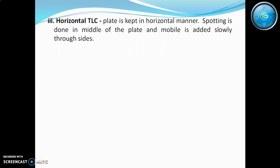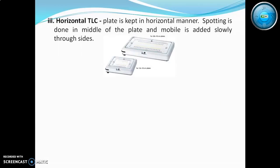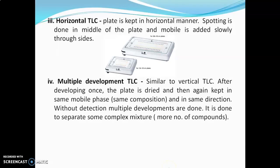In horizontal TLC, the plate is kept horizontally, spotting is done in the middle, and mobile phase is added slowly through the sides. In multiple development TLC, similar to ascending TLC, after developing once the plate is dried and placed again in the same mobile phase in the same direction without detection. This is performed to separate complex mixtures. In stepwise development, long plates of about 30 cm are used. The first half of the plate is developed in one mobile phase, taken out, dried without detection, then placed in another mobile phase for the next development. After the full plate is developed, it is visualized.